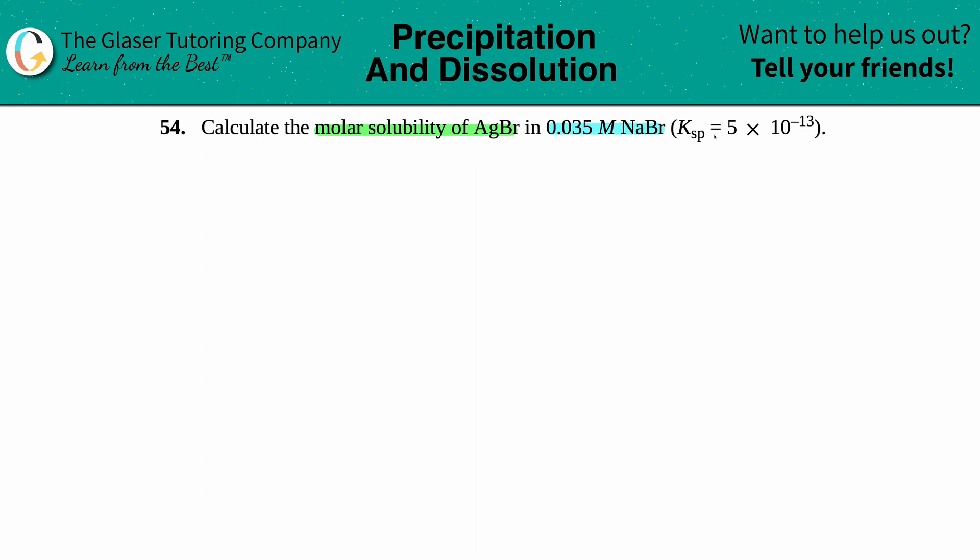Well, generally there's two ways that you could figure this out. Ksps always go with molar solubilities - Ksp solubility product, solubility goes with solubility. So this Ksp value is for AgBr.